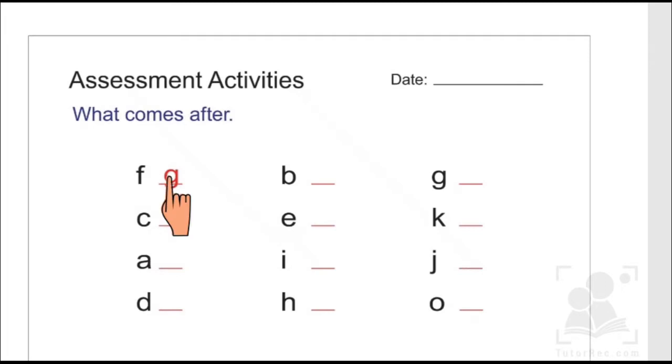The first example has been done for us. We can see that G comes after F. In the similar way, we have to write the missing letters that come after the given letters. So let's start with the first one.